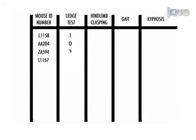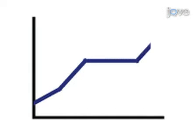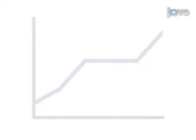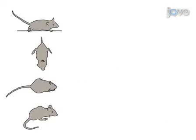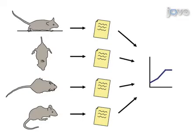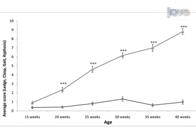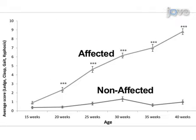We perform each test and record the score. The average sum of the four scores, or the average composite phenotype score, is calculated for each mouse group and plotted. When applying this protocol to different mouse models, it is important to first analyze the scores of the individual tests to determine the ideal combination of the four described measures. This specific protocol was designed to discriminate between affected and non-affected individuals while also quantifying the progression of disease phenotype in mouse models of spinocerebellar ataxia type 7.